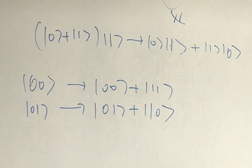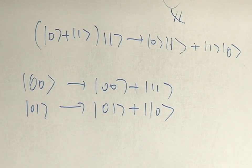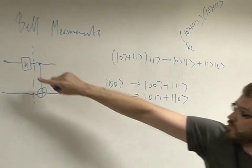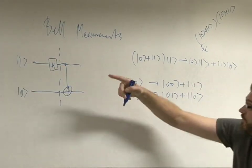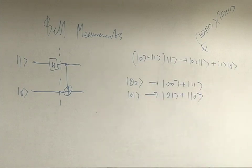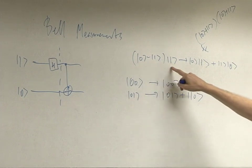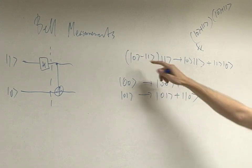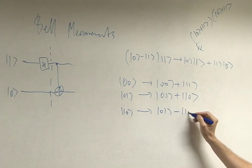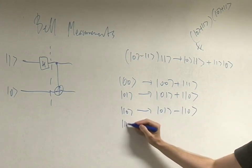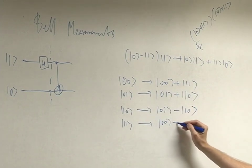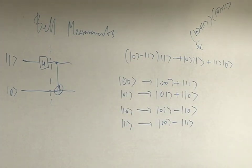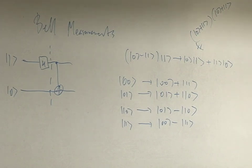What about one-zero? Well, if I start with one up here, then when I do a Hadamard, this becomes a zero minus one superposition. Then I do a control NOT. Nothing happens to zero-one. But this guy goes into one-zero but with a minus sign in between. So one-zero goes into zero-one minus one-zero. And one-one, it's got to be the one that hasn't appeared so far because these are orthogonal. This is a unitary transformation — I'm sending an orthogonal basis into another orthogonal basis. But now I've got a fully entangled basis.